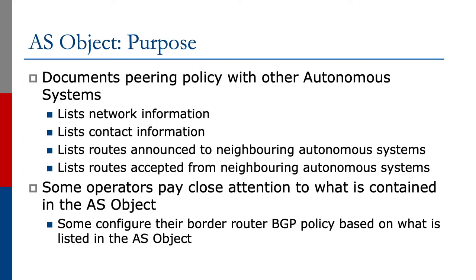The next object is the AS object. The AS object documents the peering policy used by this AS with other autonomous systems. It lists network information, contact information, and routes announced to and accepted from neighboring autonomous systems. Some operators pay close attention to what is contained in the AS object, and some will configure the border router BGP so that the policy is based on what is listed in the AS object.